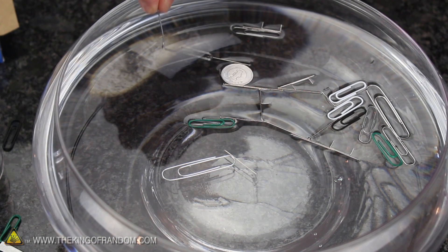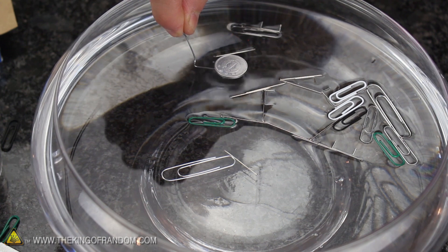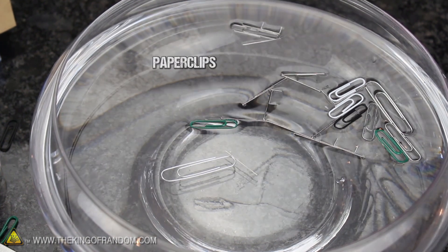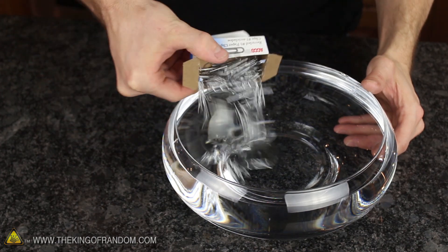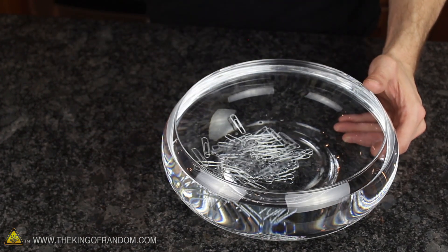Now if you really want to try this trick but can't find any aluminum coins, don't worry. You can still use things like paper clips, pins, needles, and even staples. They'll all work just as well, even though they're made of steel and nearly 3 times heavier than aluminum.